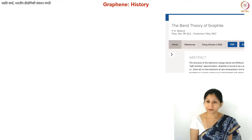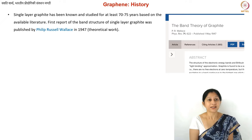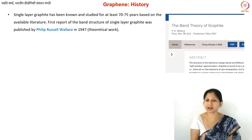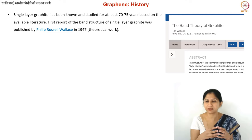Coming to the history of graphene, this is a very important topic for all carbon scientists. Single layer graphite has been studied for a very long time — first we need to understand the properties of single layer, then understand the properties of graphite, and translate those properties to graphite. The effect of pi electrons is also important for a lot of hydrocarbon materials.